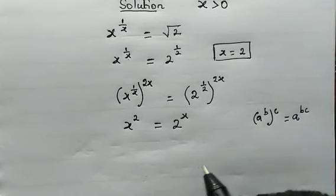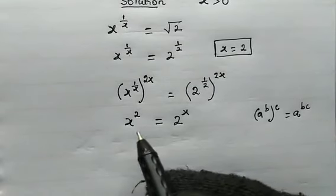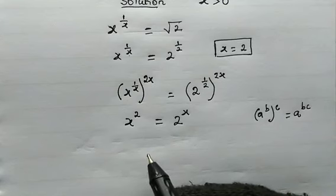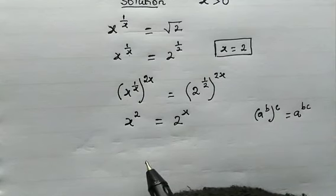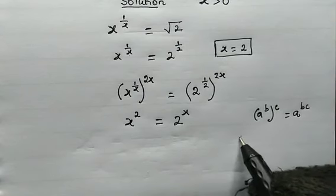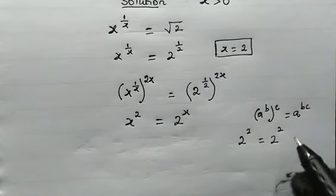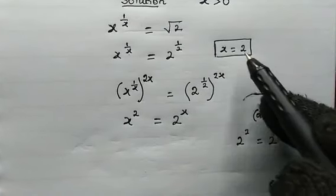Okay, now from here, we can actually make use of the Lambert W function. But we have some obvious solutions here. We all know that 2 to the power of 2 equals 2 to the power of 2, which we have found earlier that x equals 2.